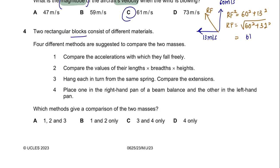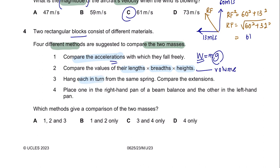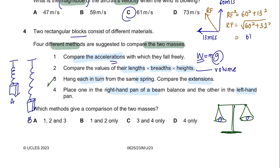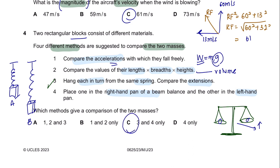Question 4. Two rectangular blocks consist of different materials. Four methods are suggested to compare the two masses. Comparing the accelerations with which they fall freely would be more suitable to compare weight. Comparing their lengths, widths, and heights would compare their volumes, so no. Hanging each from the same spring and comparing the extension could work. Placing one in the right-hand pan of a beam balance and the other in the left—you can see which side is lower, giving the higher mass. So the answer is method 3 and 4, C.